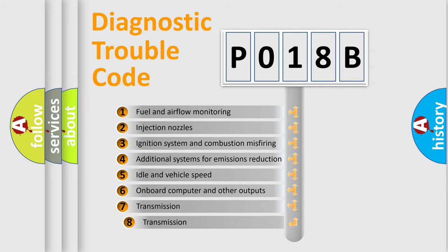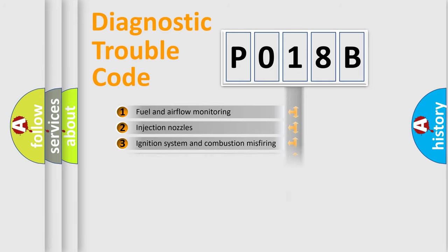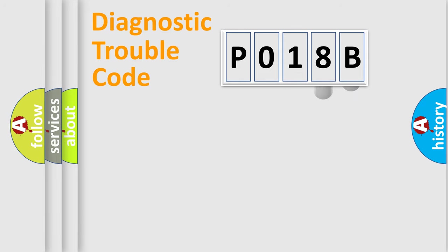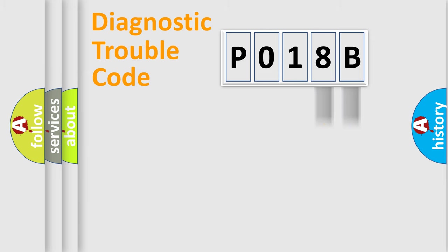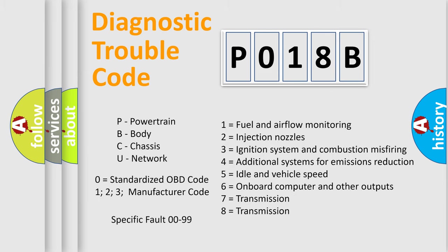The third character specifies a subset of errors. The distribution shown is valid only for the standardized DTC code. Only the last two characters define the specific fault of the group. This division is valid only when the second character code is expressed by the number zero.